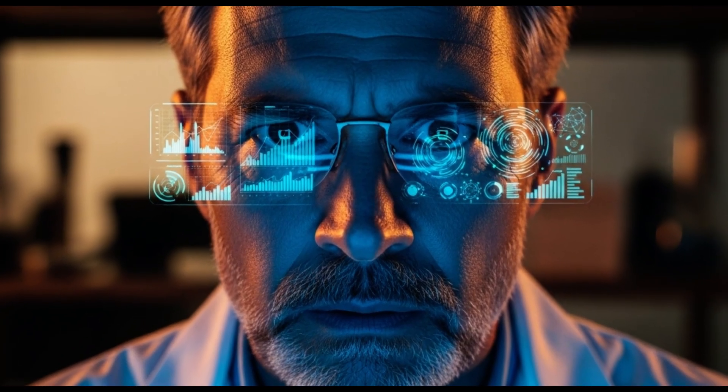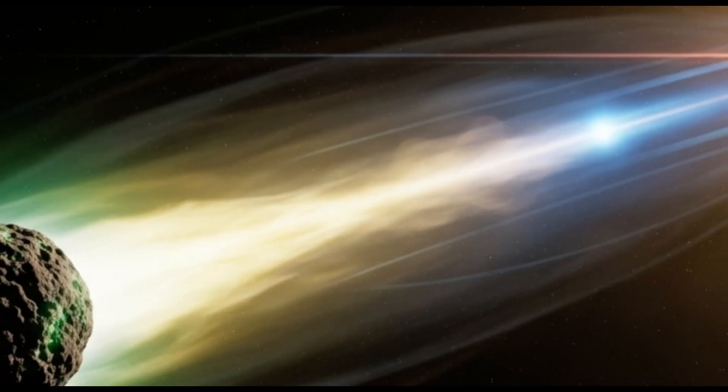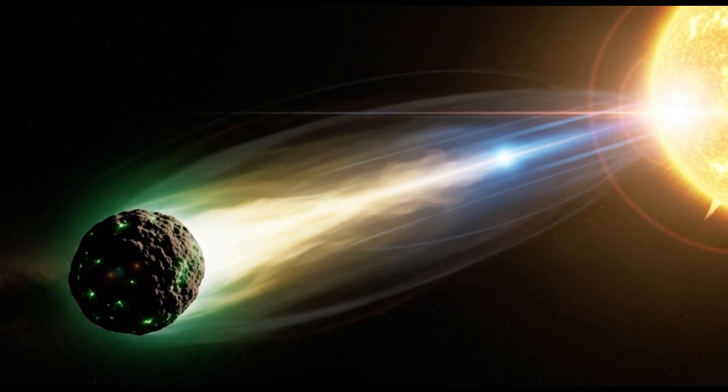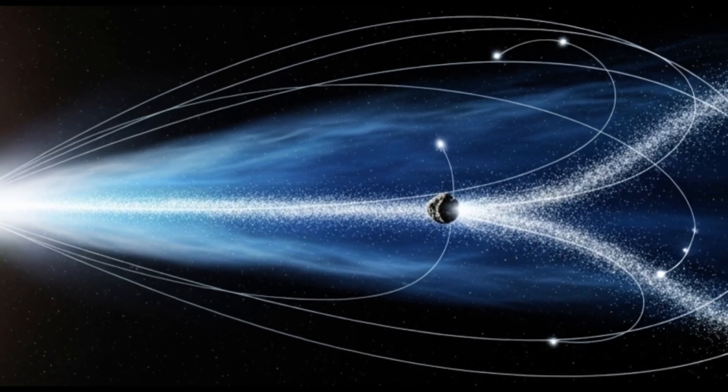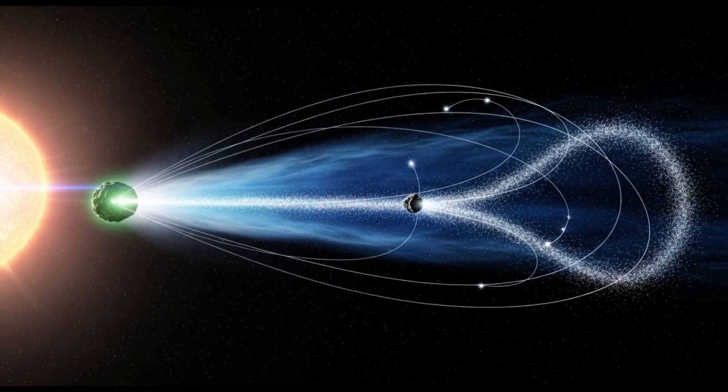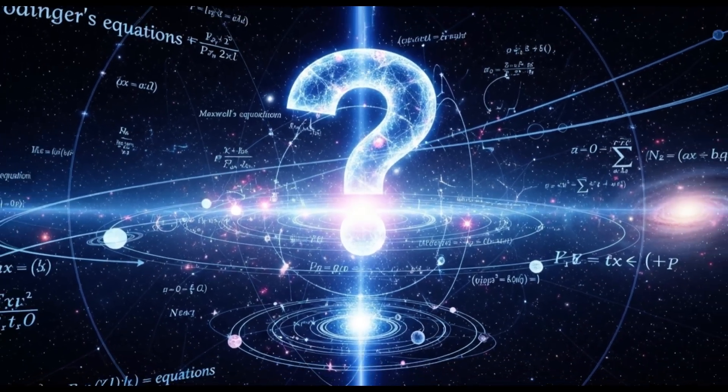But this visitor is different. It's showing features that have astronomers scratching their heads. First out there was its tail. Comets always have tails of gas and dust that point away from the sun, pushed by solar wind. But for a time, 3I/ATLAS had an anti-tail. Part of it was pointing towards the sun. This bizarre behavior defied our basic understanding of cometary physics.